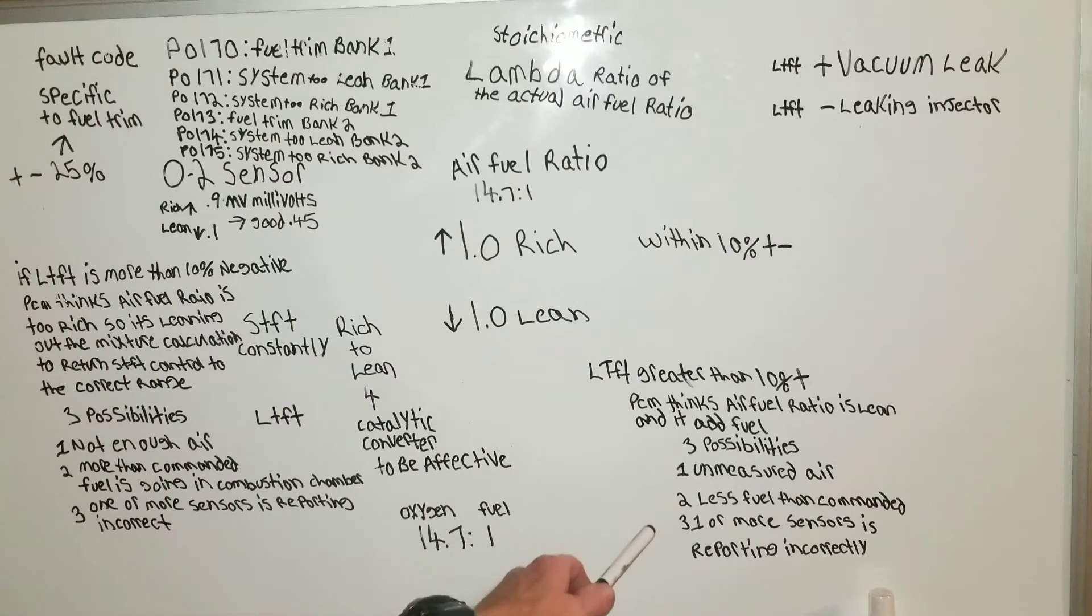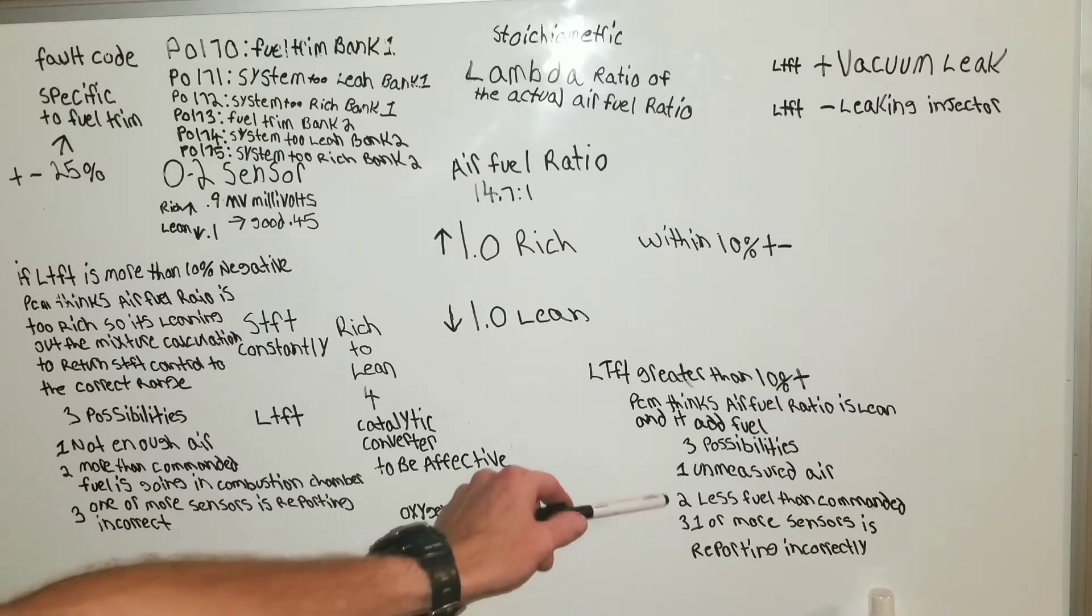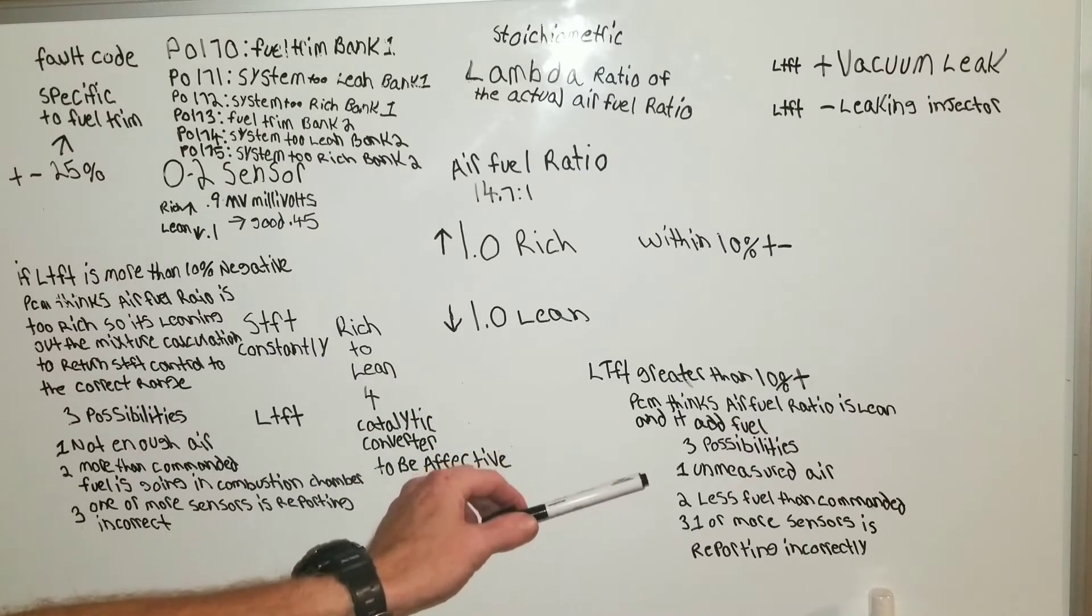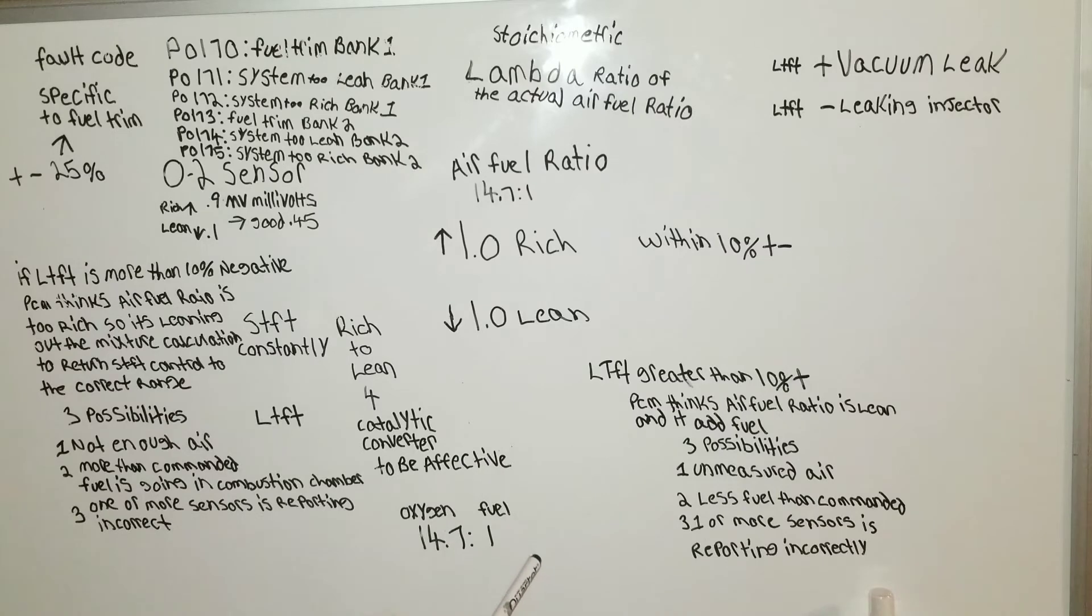Number two, less fuel than commanded. So, that's another thing. Again, your pulse width is adjusted via air fuel ratio sensor, wide band oxygen sensor, or your typical O2 sensor. So, it will adjust the pulse width of the fuel injector and it uses this as a map for what it should or should not be.